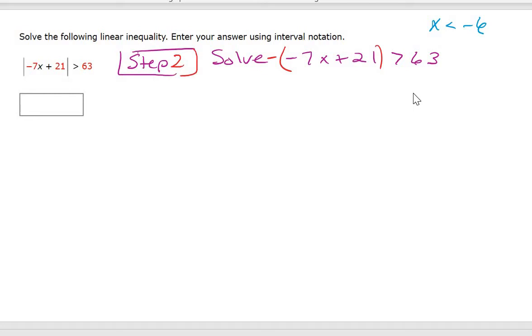Step two is to take that same thing inside the bars, slap a minus sign on the outside of the bars, and then solve the same equation again. The minus sign does not get tacked onto the 63 - only that stuff inside the bars.